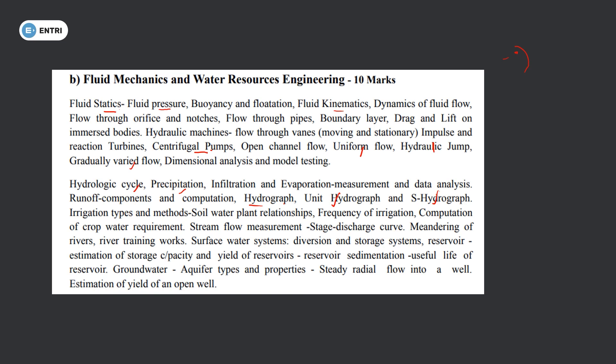Hydrology continues with irrigation methods: soil-water-plant relationship, optimum moisture, permanent wilting point, ultimate wilting point. Frequency of irrigation. Evapotranspiration and crop water requirements — computation of crop water, duty, delta, net irrigation, gross irrigation. Stream flow measurements, stage-discharge curve. Rivers and meandering, river training works.